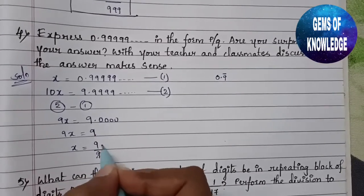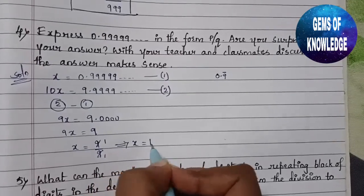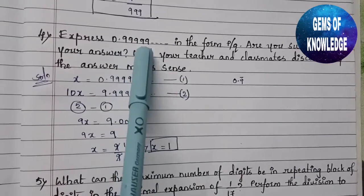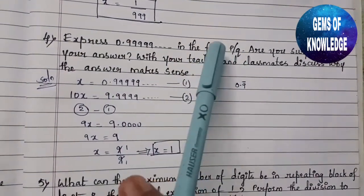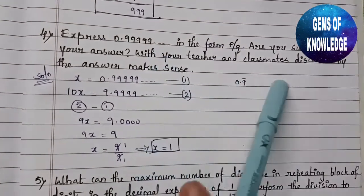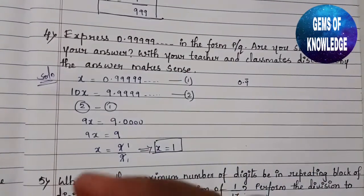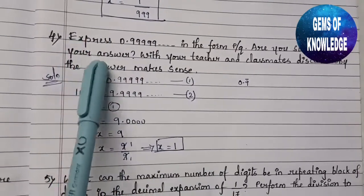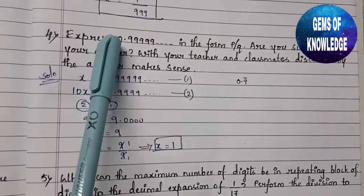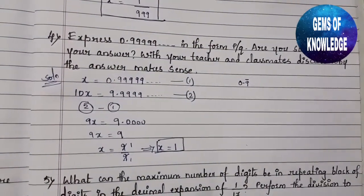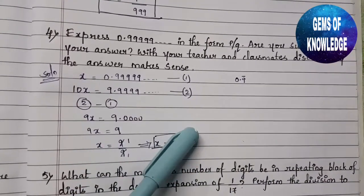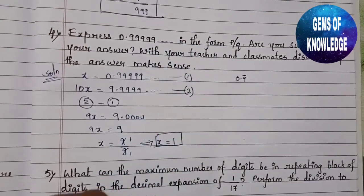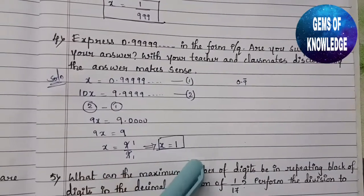From 9x = 9, we get x = 9/9 = 1. So the answer is x = 1. They asked if we are surprised — we had 0.9999... and we got the answer in p by q form as 1/1, which equals 1. We can discuss why this makes sense: 0.9999... is very, very close to 1, and when we round off this number we get 1 itself.